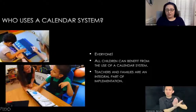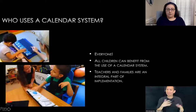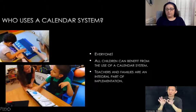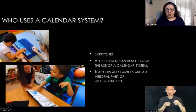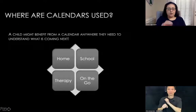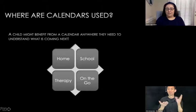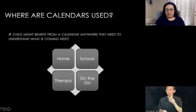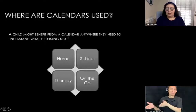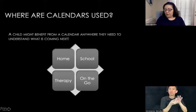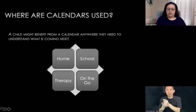When we talk about the calendar system in this context, of course we're talking about children or adults with dual sensory loss, but the people who work with those children are a huge piece of that implementation. Calendars can be used anywhere a child needs to know what's coming next — in the home, in schools, in therapies whether private or school-based, and on the go. If you have a kid going from one therapy to the next, this is something they might have to support those transitions.